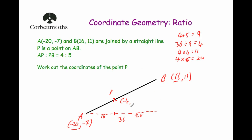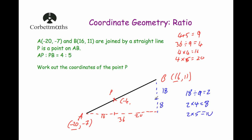Considering vertically: we go from −7 up to 11, a rise of 18. P is on the line with AP to PB in the ratio 4 to 5. So we divide 18 in that ratio. 18 divided by 9 is 2; 2 times 4 is 8; 2 times 5 is 10. So we go up 8 to reach P, then up another 10 to reach B. Starting at −7 and adding 8 gives 1. Checking: 1 plus 10 is 11. Correct. So the coordinates of P are (−4, 1).